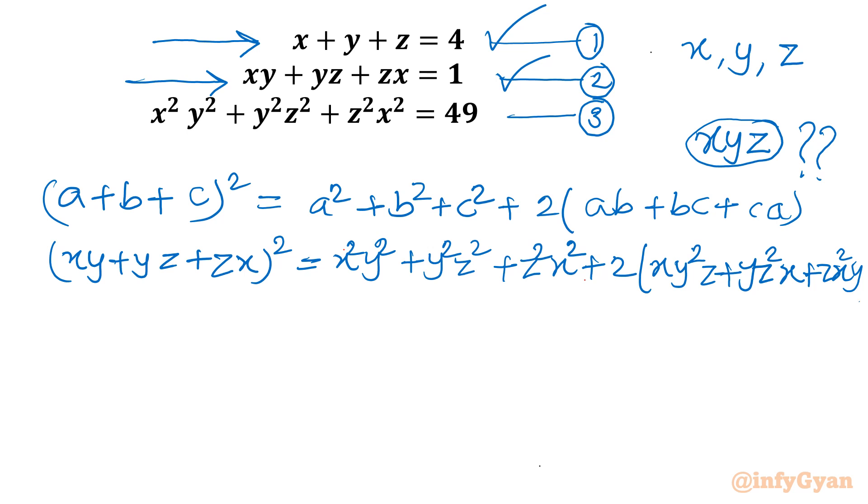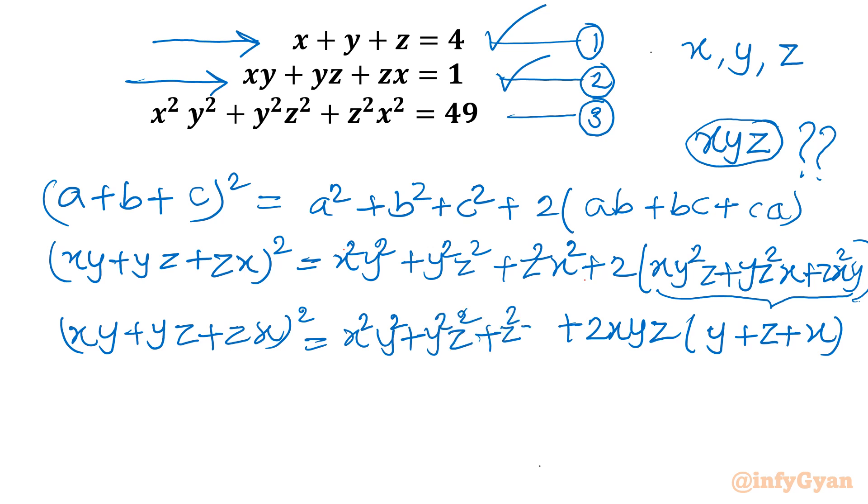Plus two times in bracket. Now in the next step I will take xyz common from this bracket. So it will become plus 2xyz, and in bracket it would be left y plus z plus x. Now you can see, let me write here so that we can put the values given in this problem.